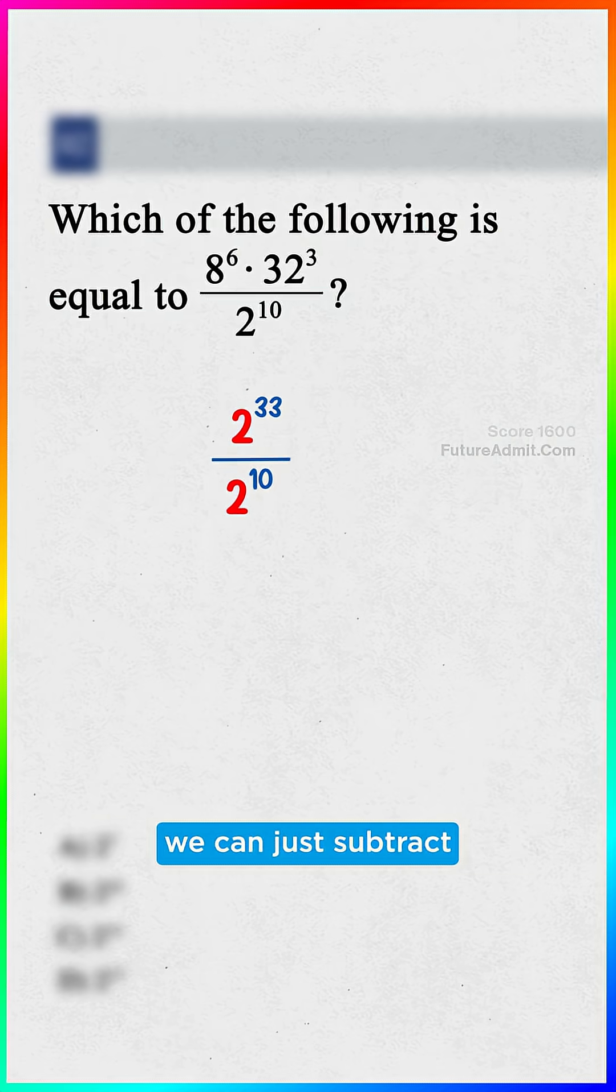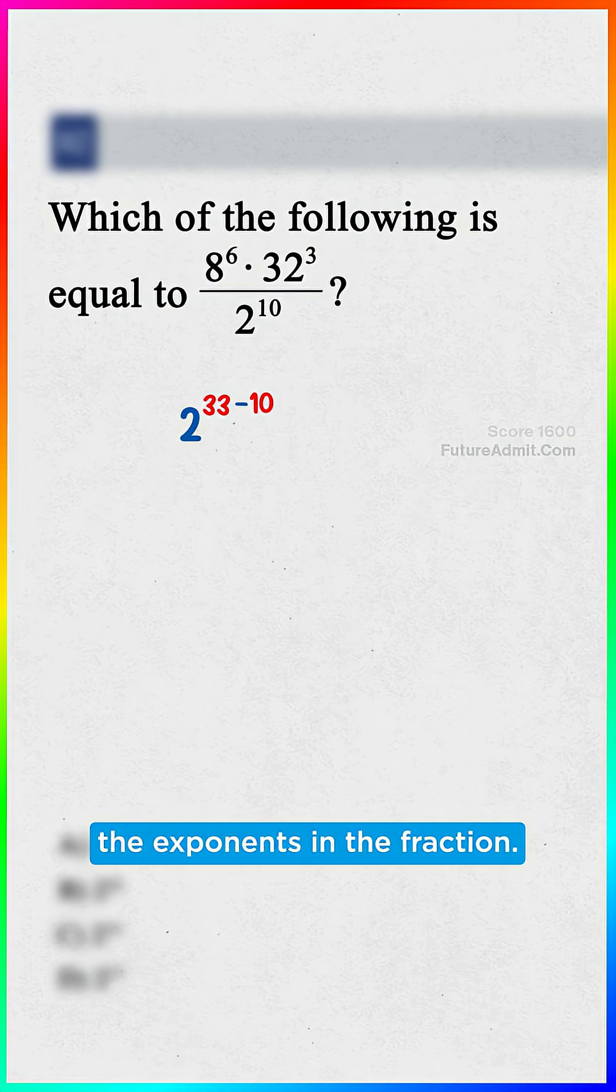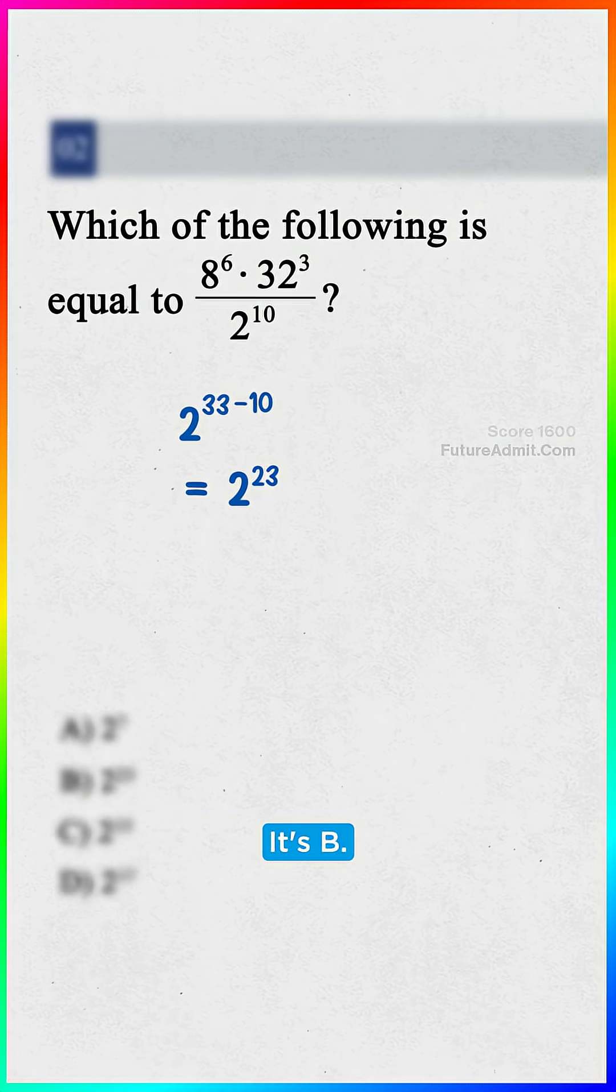And sweet, since the bases are the same, we can just subtract the exponents in the fraction. 33 minus 10 is 23. It's B!